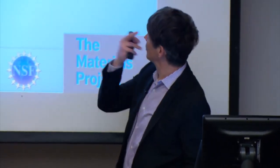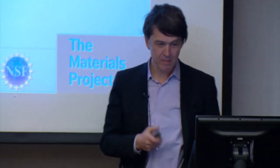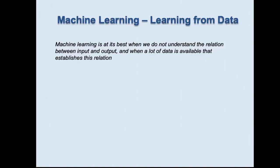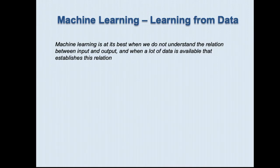I'm going to get to the 3 million research papers, but first, my perspective on machine learning: this is at its best when you don't understand the relation between some input and some output, and you have a lot of data available that has explored that relation. If you already know the equations that relate input and output, why would you want to machine learn it?